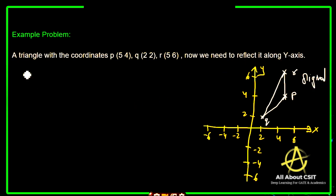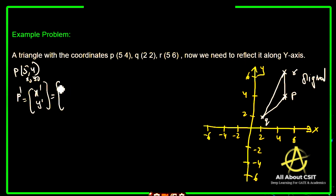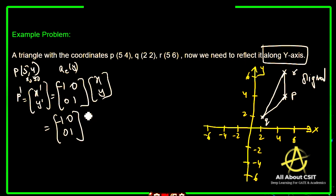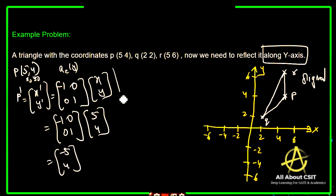Now let's find the new coordinates. The problem asks us to reflect along the y-axis. The reflection matrix for the y-axis is [-1, 0; 0, 1]. For point P with coordinates (x-naught, y-naught) = (5, 4), we multiply: [-1, 0; 0, 1] times [5, 4] gives us minus 5 and 4. So P-dash is (-5, 4).